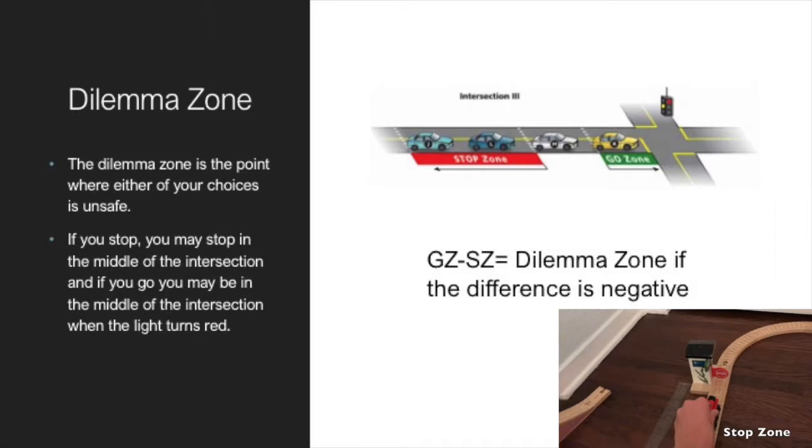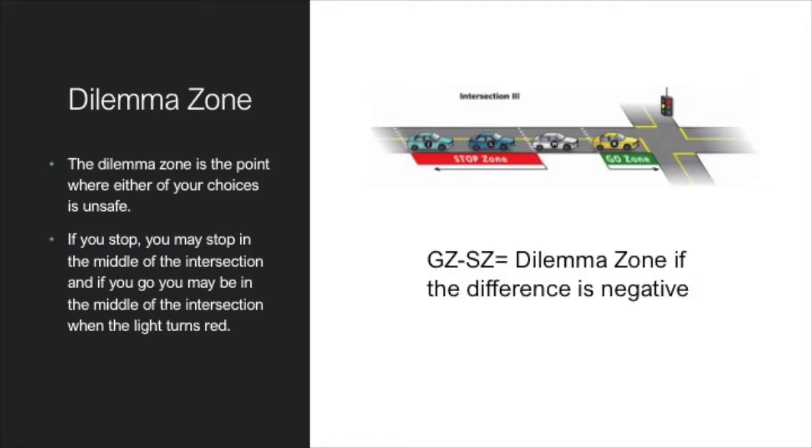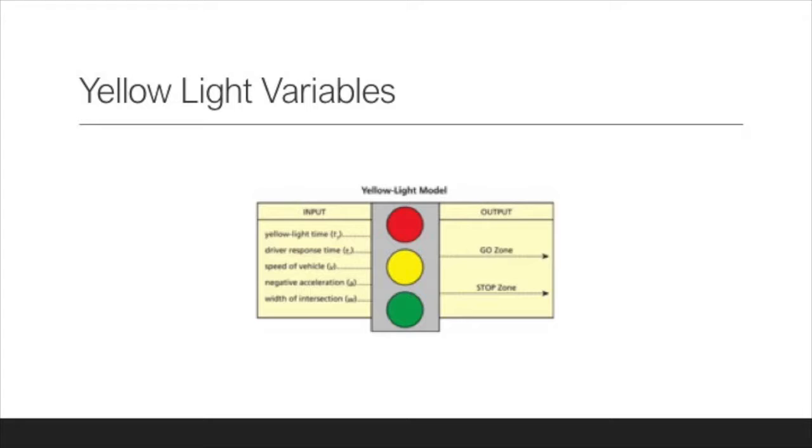The dilemma zone is the point where either choice is unsafe. If you stop, you may stop in the middle of the intersection, and if you go, you may be in the middle when the light turns red. The overlap zone is where it is safe to either stop or go.